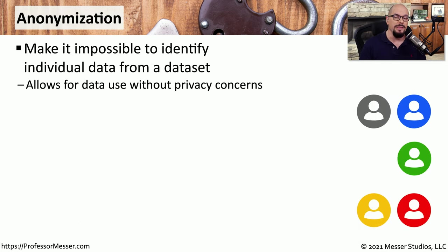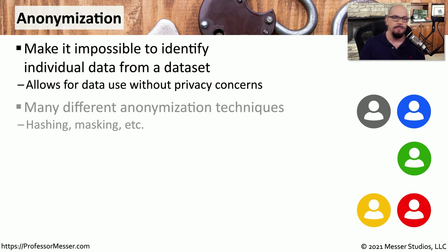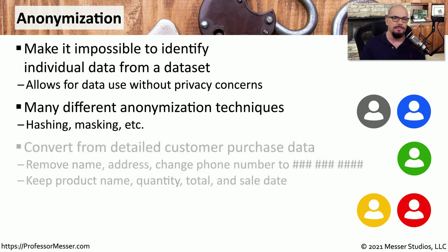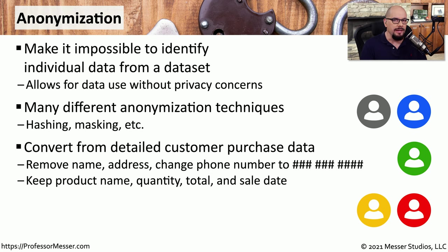There may be times when data is protected by not displaying anything associated with it, and we refer to that as anonymization. This is when we take existing data and make it impossible to identify anything associated with the original data that was saved. There are many different ways to anonymize data: we could hash it so it would be unreadable, use masking techniques to put asterisks in place of the actual data, or anonymize some data while leaving other pieces in place if we want to perform some type of analysis.